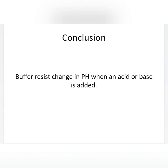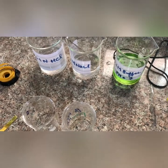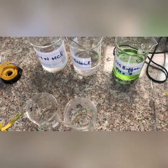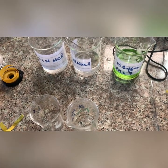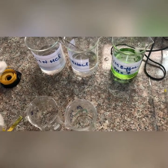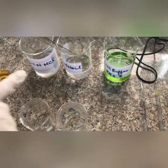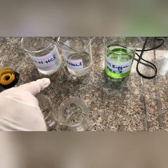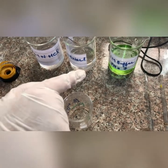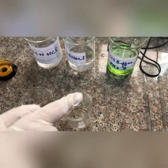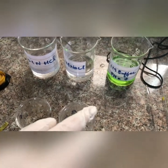So what we can conclude from this experiment is that buffer resists a change in pH when acid or base is added. We have three solutions: 0.1 N HCl, 0.1 M NaCl, and 0.1 M buffer solution.